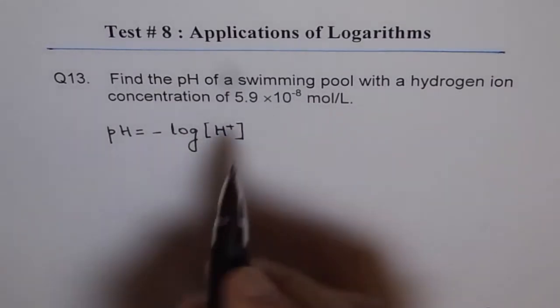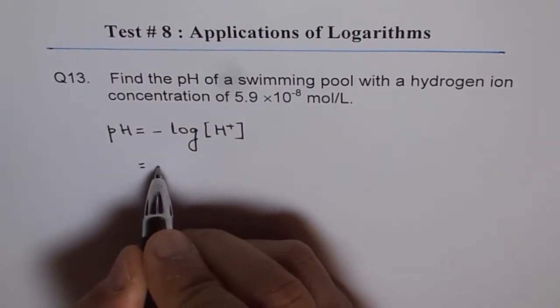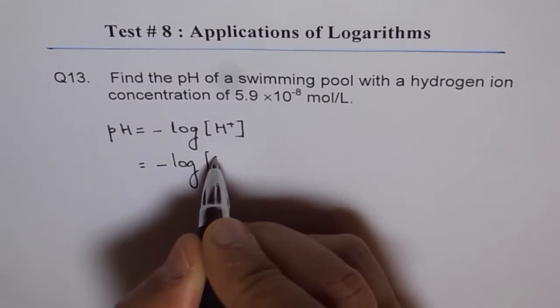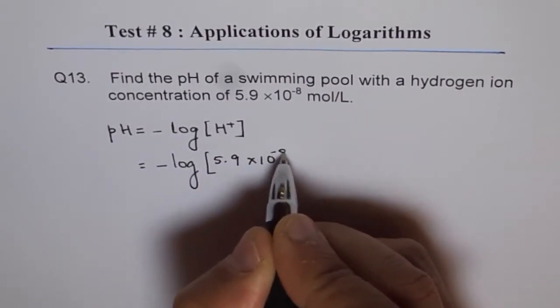So H plus is the hydrogen ion. This equals minus log 5.9 times 10 to the power of minus 8.